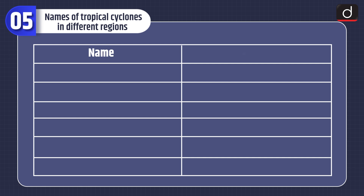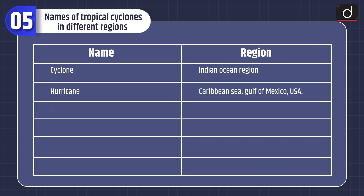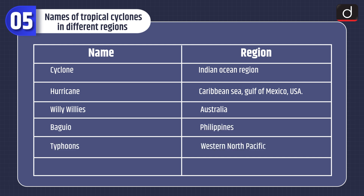Now let's look at the names of tropical cyclones in different regions. It is named Cyclone in the Indian Ocean region, Hurricane in the Caribbean Sea, Gulf of Mexico and USA, Willy-Willy in Australia, Baguio in the Philippines, and Typhoon in the Western North Pacific and Japan.